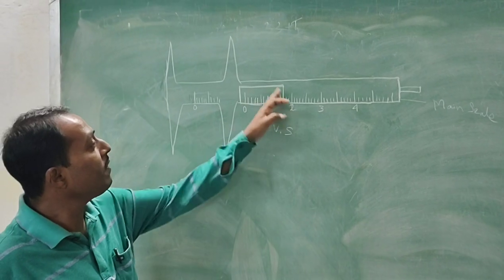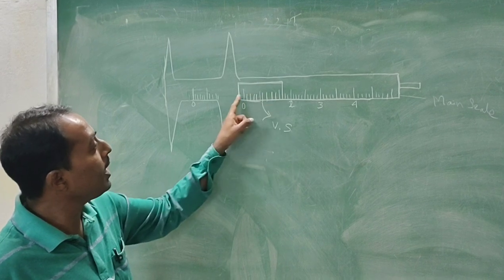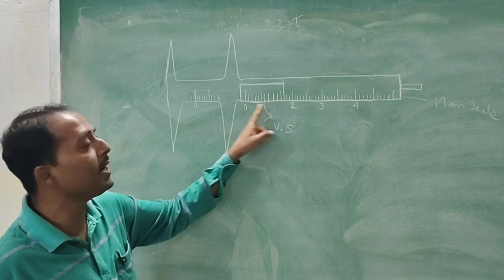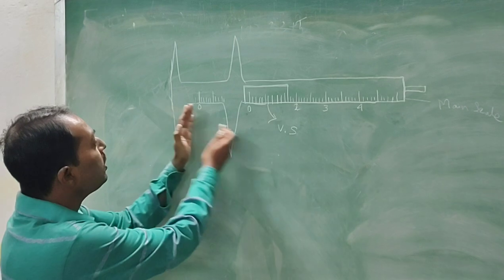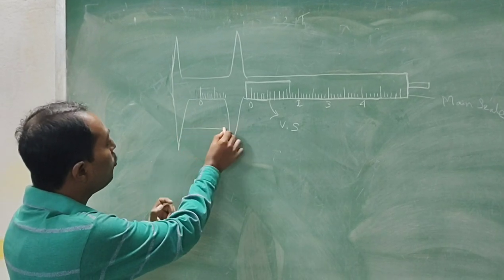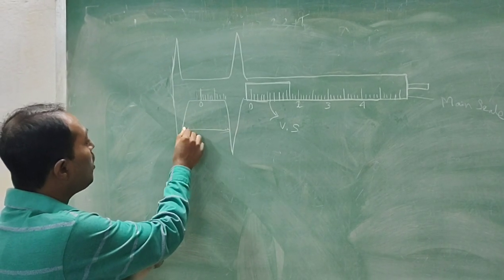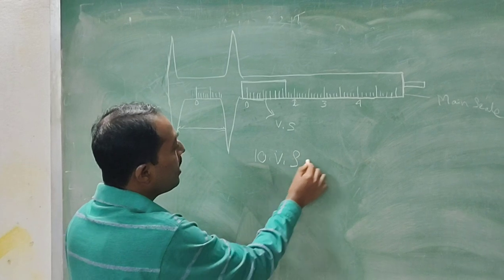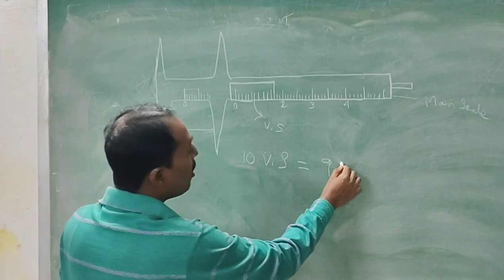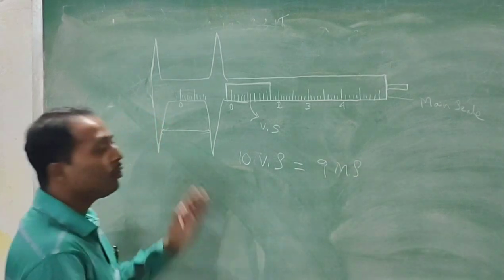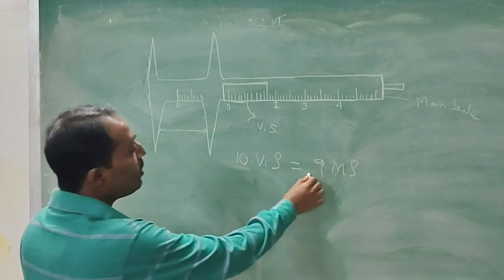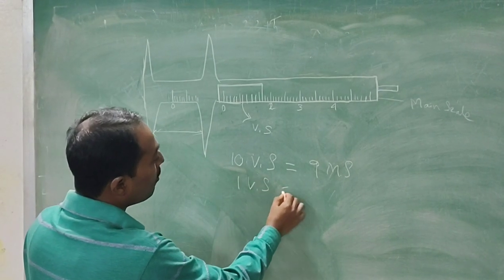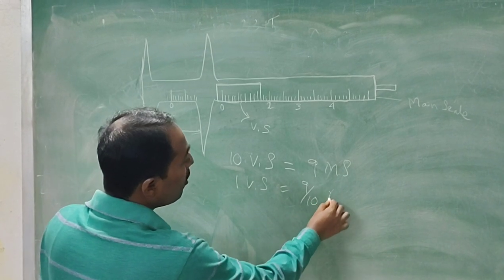In the Vernier scale, you count there are 11 divisions. The first one is 0, and there are another 10 divisions, so total is 11 divisions. Now if we close the Vernier Calipers — the two jaws — when these two jaws are closed, you can see the 10 divisions of the Vernier scale coincide with 9 divisions of the main scale. So suppose 10 divisions equals 9 divisions of main scale, then 1 Vernier scale division equals 9/10 of a main scale division.